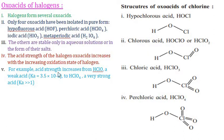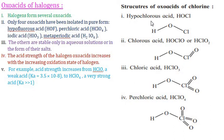The acid strength increases from HClO to HClO4. Hypochlorous acid is a weak acid with a dissociation constant of 3.5 × 10⁻⁸, while perchloric acid is a strong acid with a much greater dissociation constant. Hence, the strength of oxoacids of halogens increases from hypochlorous acid to perchloric acid.